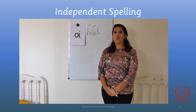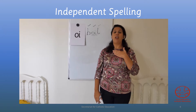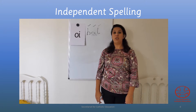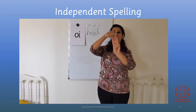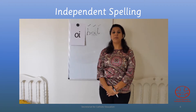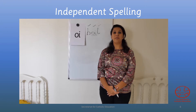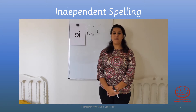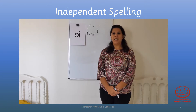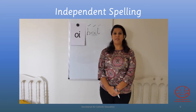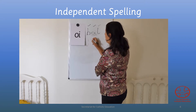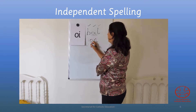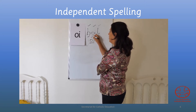Our next word is 'join'. Join — three sounds. Show me three fingers. Very good. You're going to spell it on your fingers, and when you're done, write it. I'm going to write it: J, oi, n. A tick for your J, a tick for your oi, and a tick for your n.